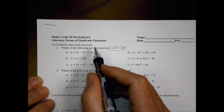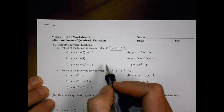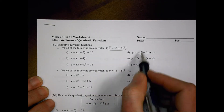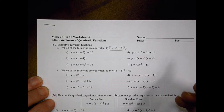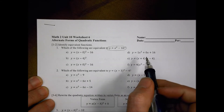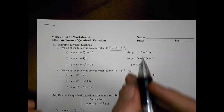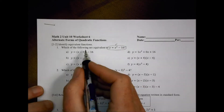What we're talking about is that there are different ways to write this quadratic function. While these are all a variety of things that look different, there are some things where, if we factor or combine like terms, we can see how it might be the same quadratic equation.